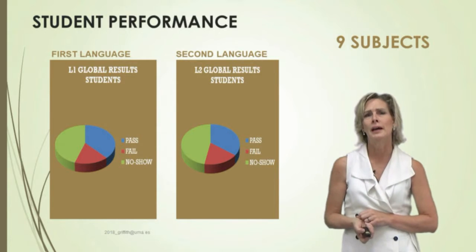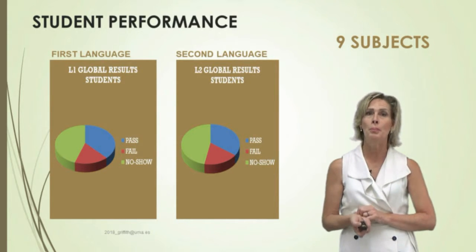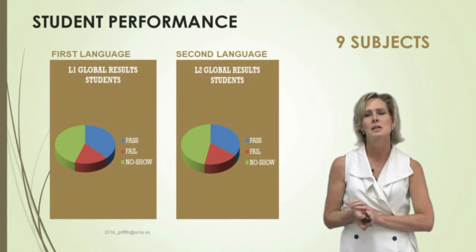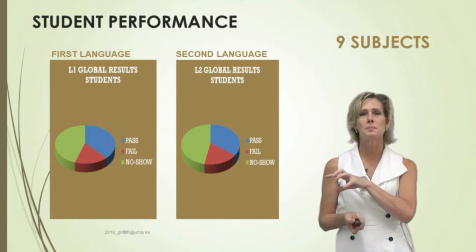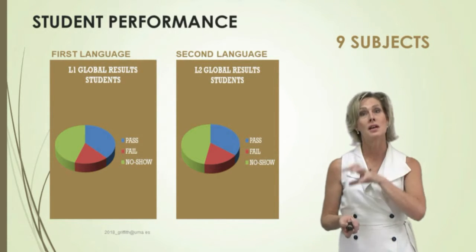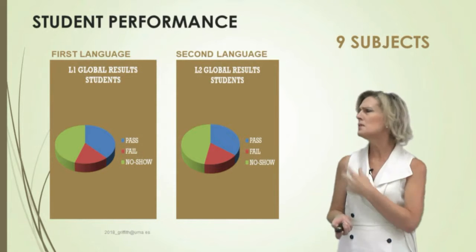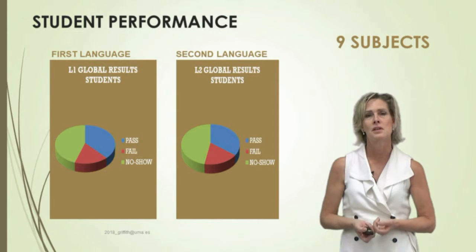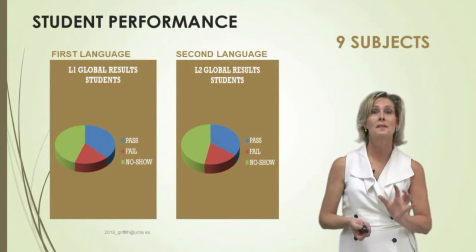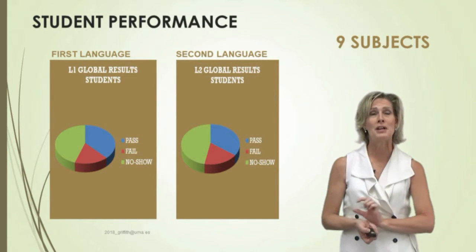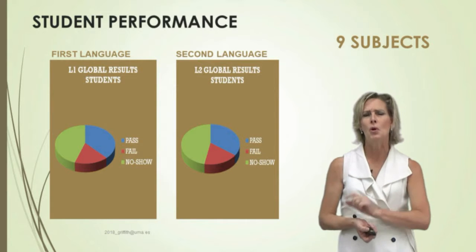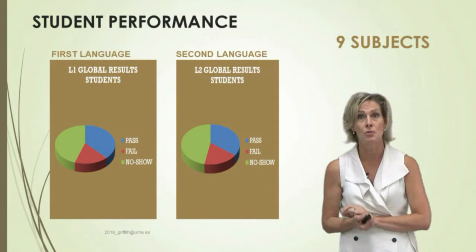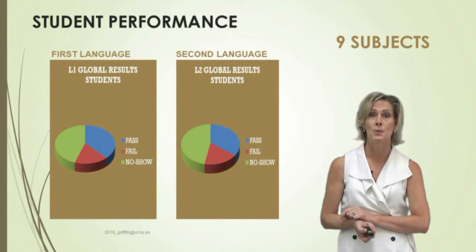The next data we're going to look at compares first language with second language final results. Nine subjects in Spanish, which was the first language, and nine subjects in English. You can see that there's great internal consistency in these subjects. Professors thought the subjects were a little bit better taught through English, but the overall data shows them to be exactly the same. I consider this a great success for this bilingual program.